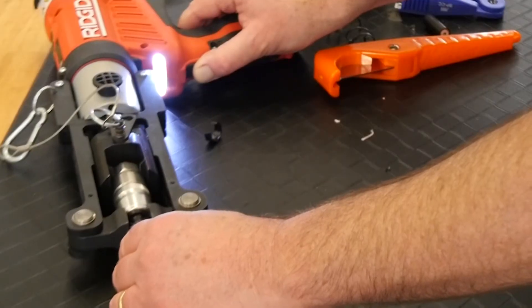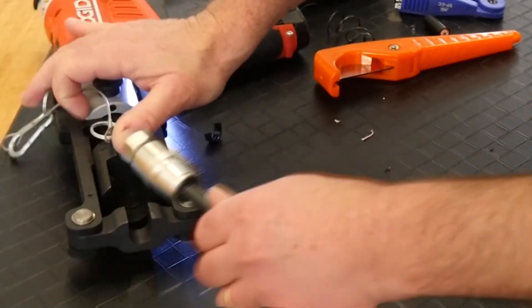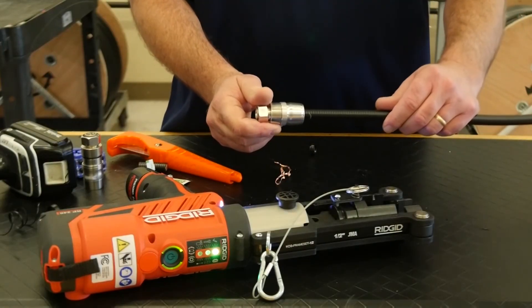Press the HCG trigger until the tool fully cycles. When fully compressed, the connector will move away from the alignment mark.